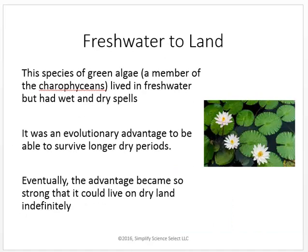This species, a member of the Charophytes, lived in fresh water and had wet and dry spells. As these dry spells kept coming up, some things would dry out and die and others would last. It was an evolutionary advantage to survive longer dry periods. As they evolved to survive longer and longer, the advantage became so strong that these organisms could live on dry land indefinitely.